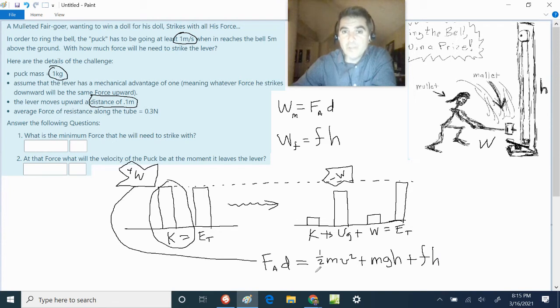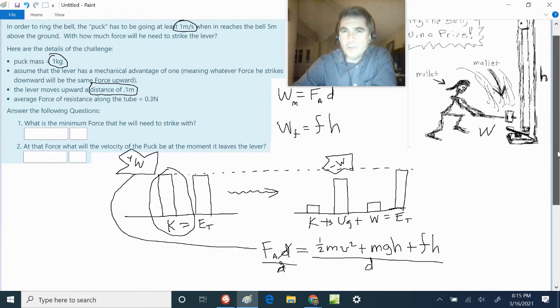And so, in order to solve this, we're going to take this and divide each side by D. And so, you should be able to solve that now.